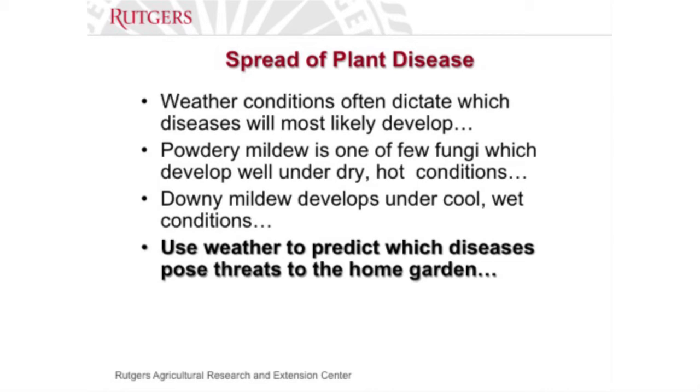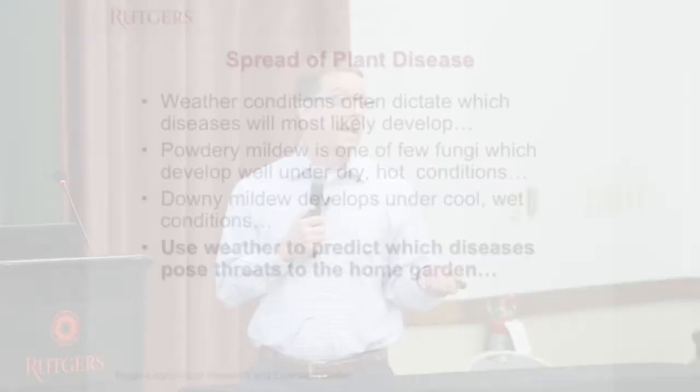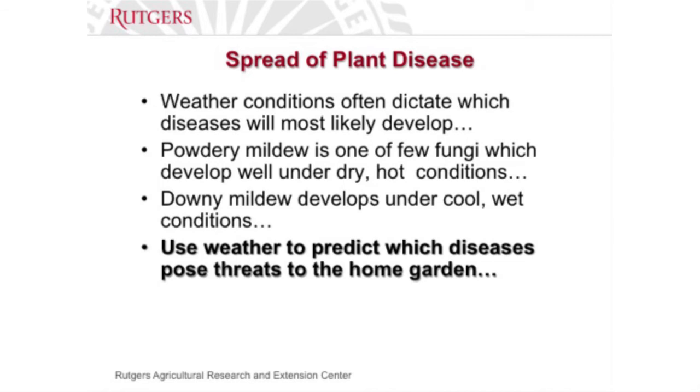Weather conditions often dictate which diseases are most likely to develop. Powdery mildew likes hot, dry weather — if it's going to be hot and dry for the next four weeks, you'll see a lot more powdery mildew than downy mildew. Downy mildew generally likes cooler, wetter weather. So if you know what's going to happen in the next ten days, you can plan ahead. That's what farmers do — they use the weather forecast to dictate when they're going to spray their fungicides or insecticides.